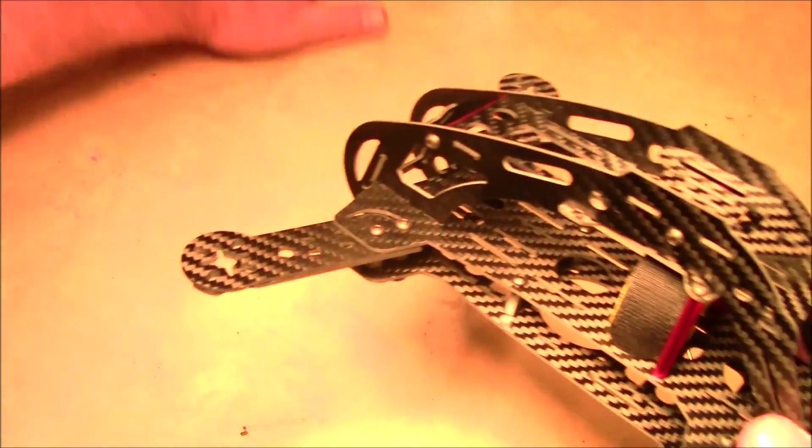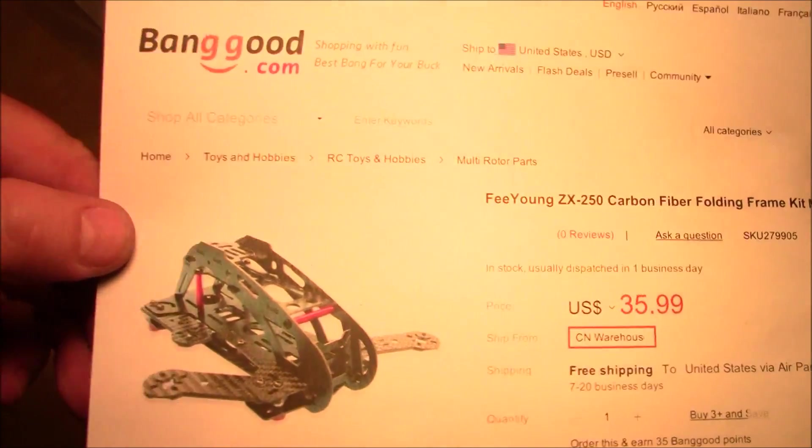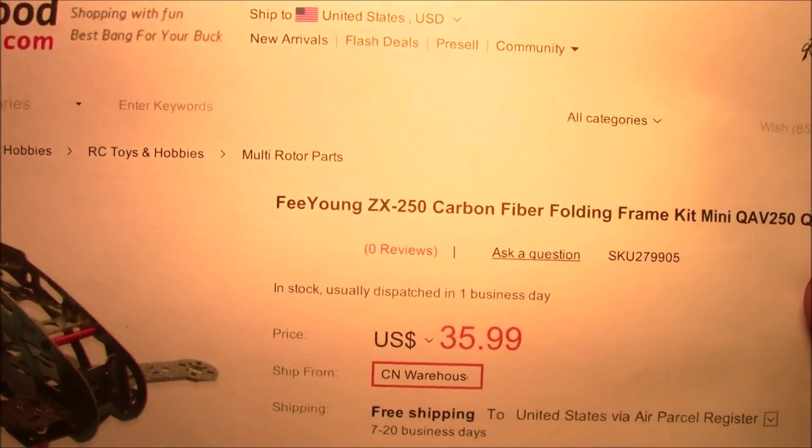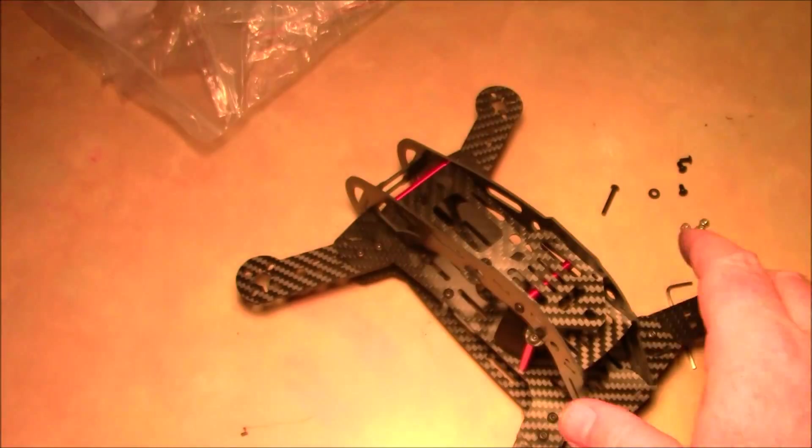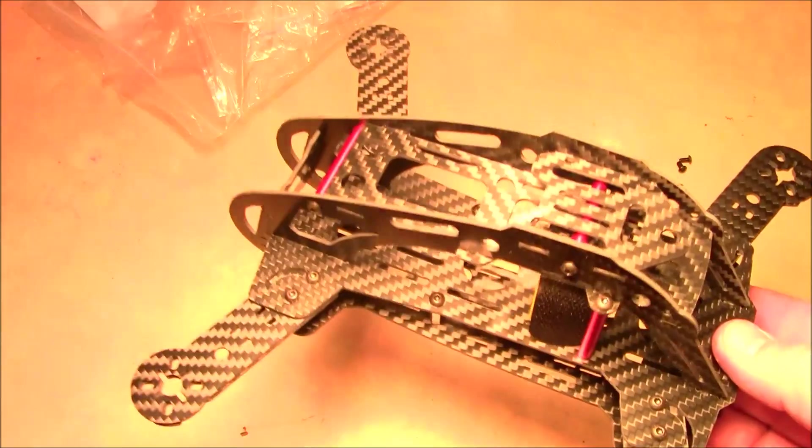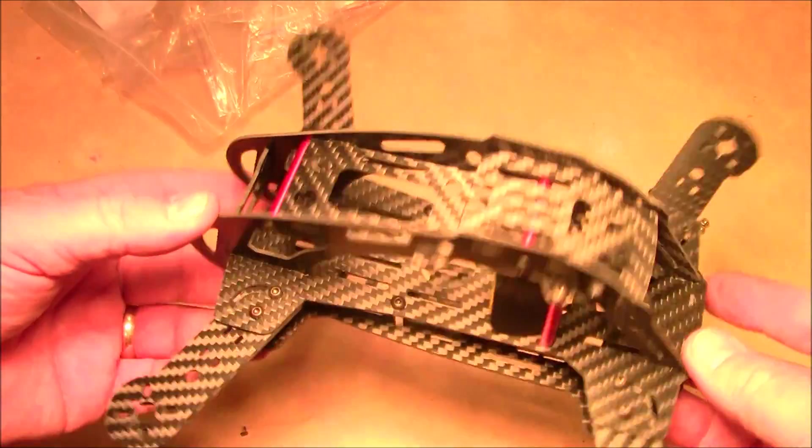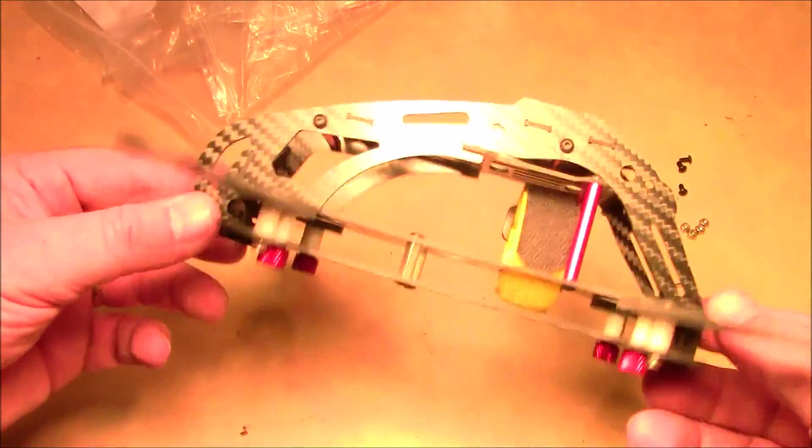Anyway, this is the ZX-250 frame. The Fihong Z-Aux 250 carbon fiber folding frame kit from Banggood. If you're interested in this I'll have some links in the description. Now I do have some friends who say they won't fly anything unless it has the folding arms.